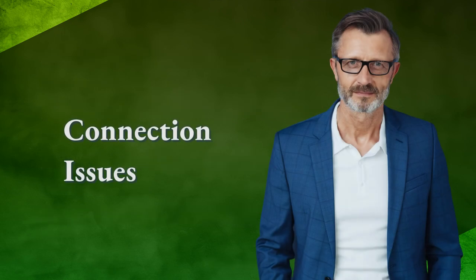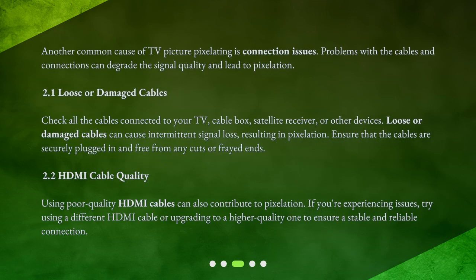Another common cause of TV picture pixelating is connection issues. Problems with the cables and connections can degrade the signal quality and lead to pixelation. Check all the cables connected to your TV, cable box, satellite receiver, or other devices. Loose or damaged cables can cause intermittent signal loss, resulting in pixelation. Ensure that the cables are securely plugged in and free from any cuts or frayed ends.